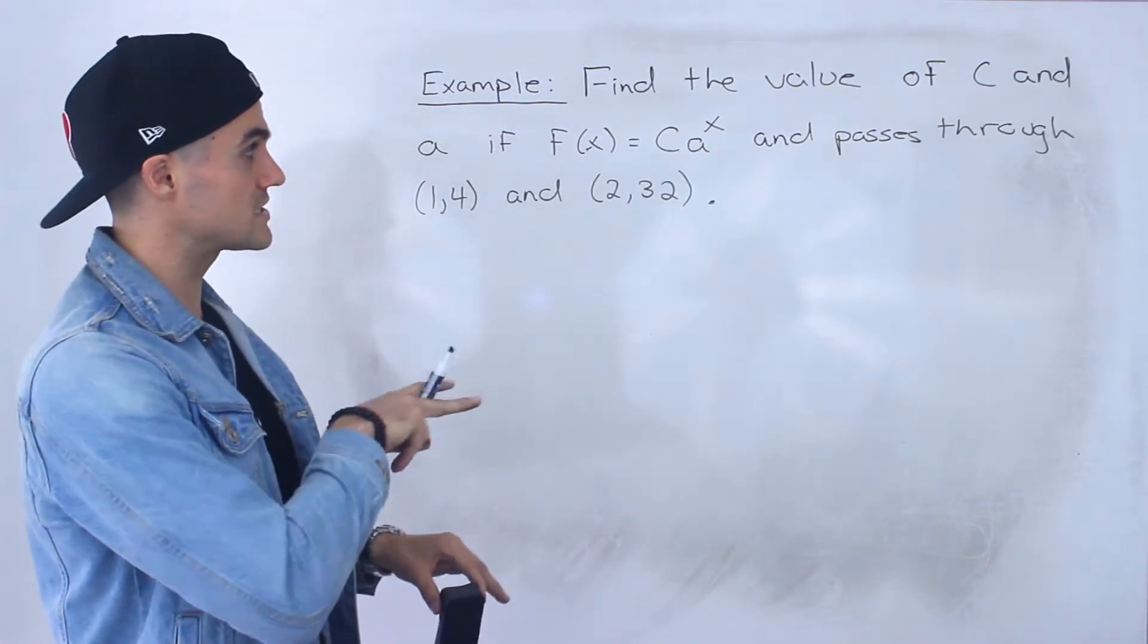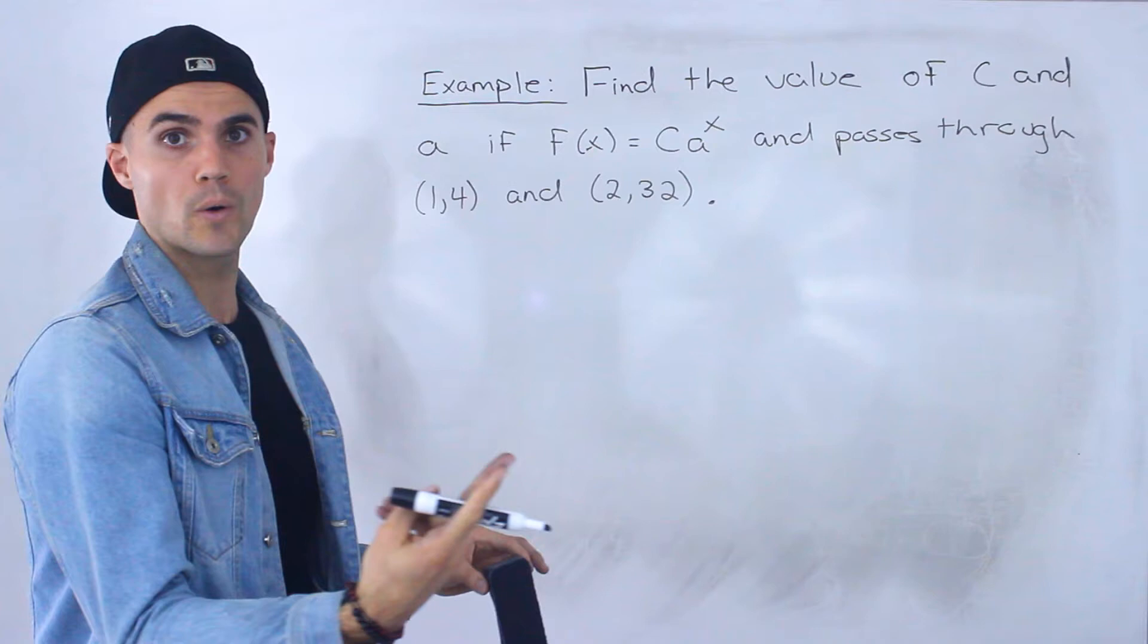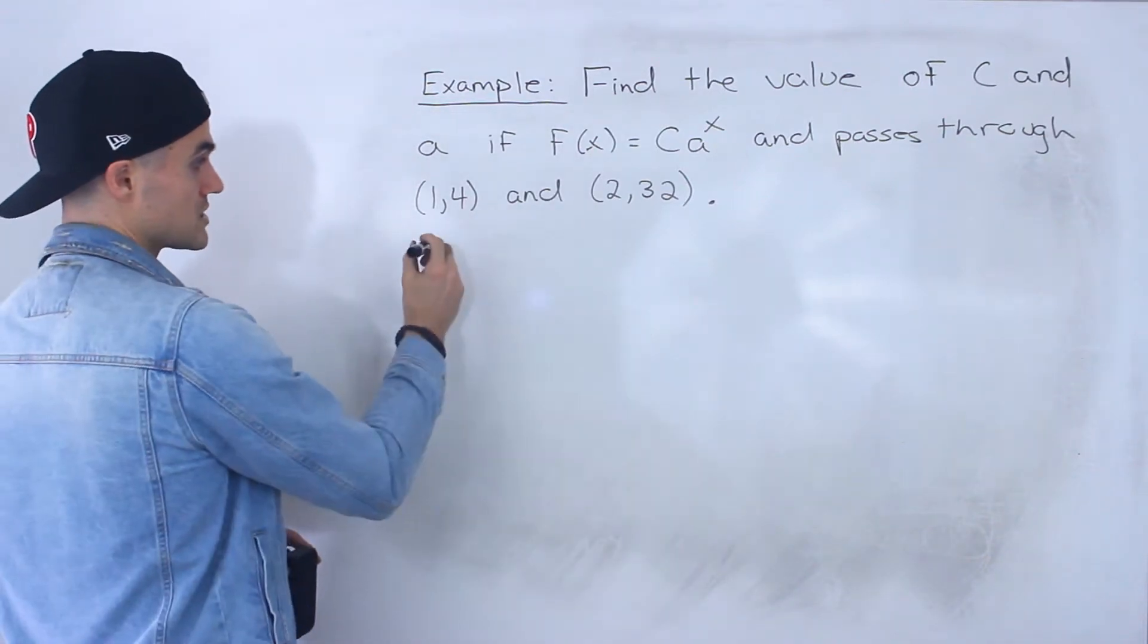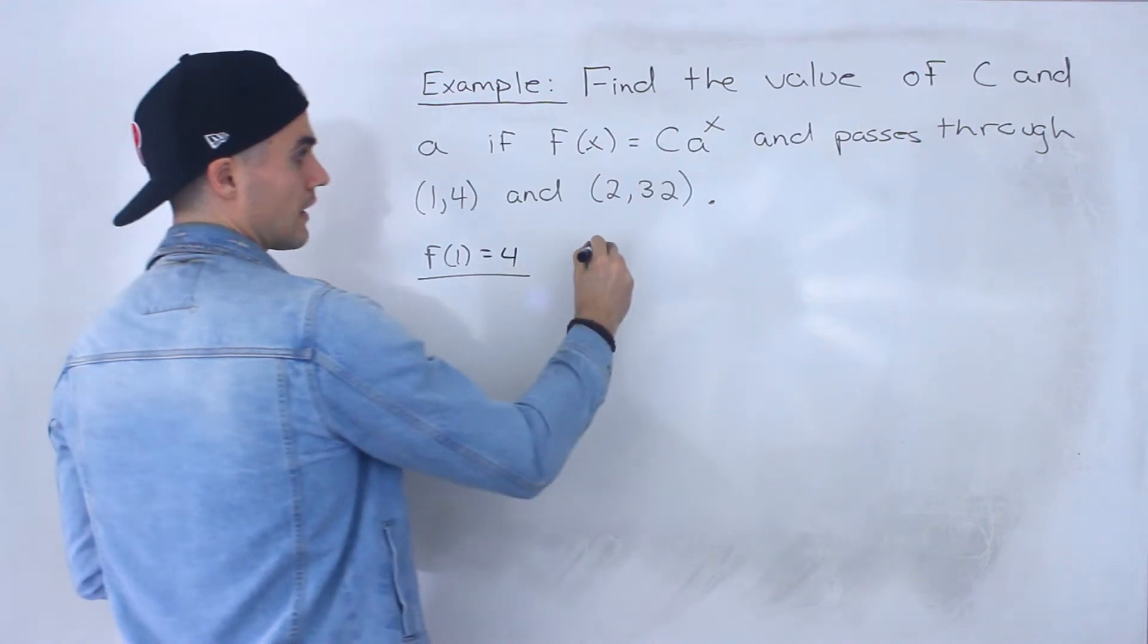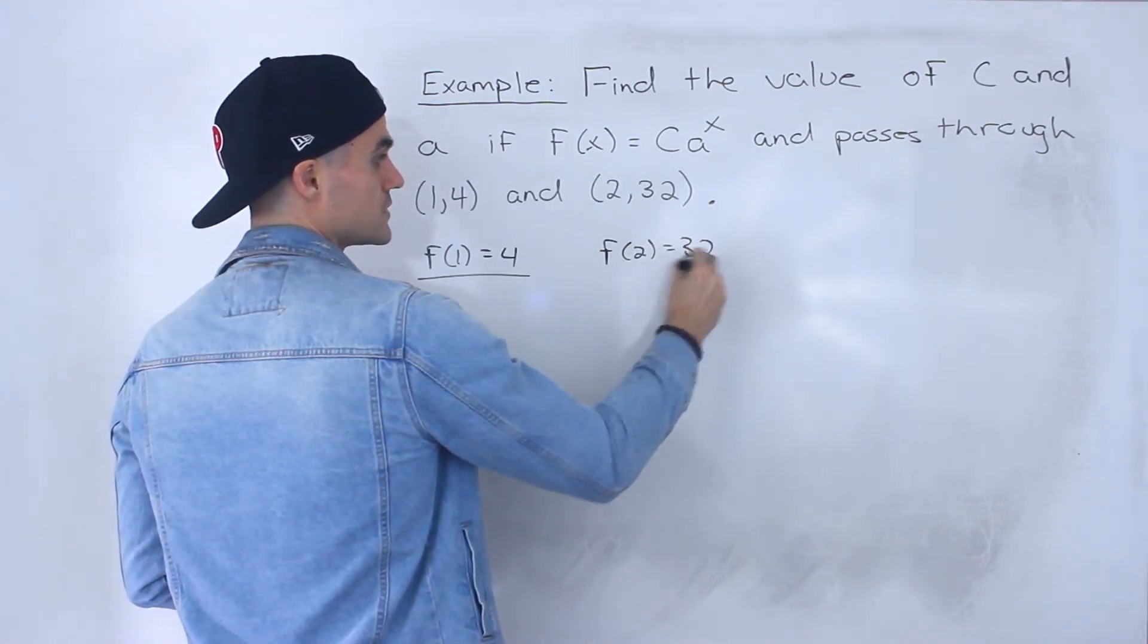So notice we have two unknowns, c and a. We got to make two equations then. And we can use these points. So basically, we know f of 1 has to equal 4, and then f of 2 has to equal 32.